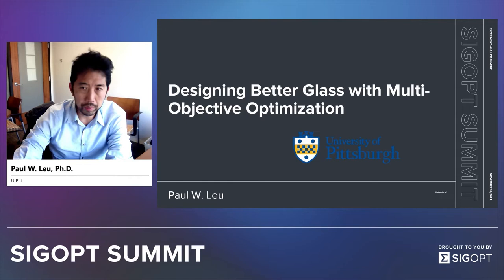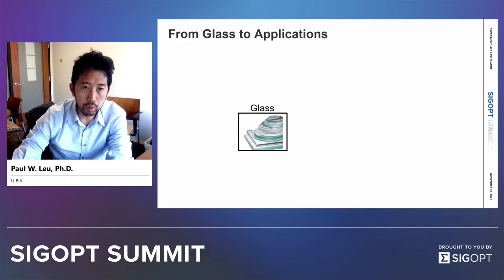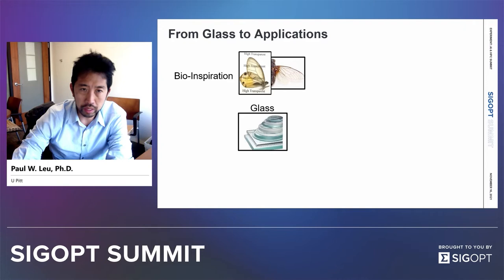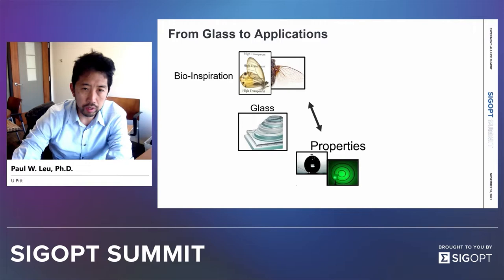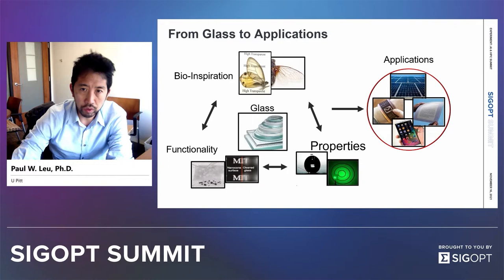In particular, I'm talking about optoelectronic glass. This is for a variety of applications, things such as solar modules, your tablets, TVs, smartphones, a lot of different types of optoelectronic devices. We'll be discussing how we can draw from bio-inspiration, different structures found in nature, and create properties important for glass, such as high transparency, light scattering properties, and water and liquid repellency. We'll talk about how these relate to different functionalities such as self-cleaning or stain resistance.